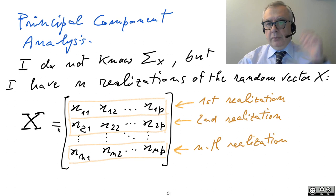What I'm going to do, however, when I have not the covariance matrix sigma X, but just the data, and in practice, this is what will happen. I don't know sigma X, but I have some realizations of the random vectors.